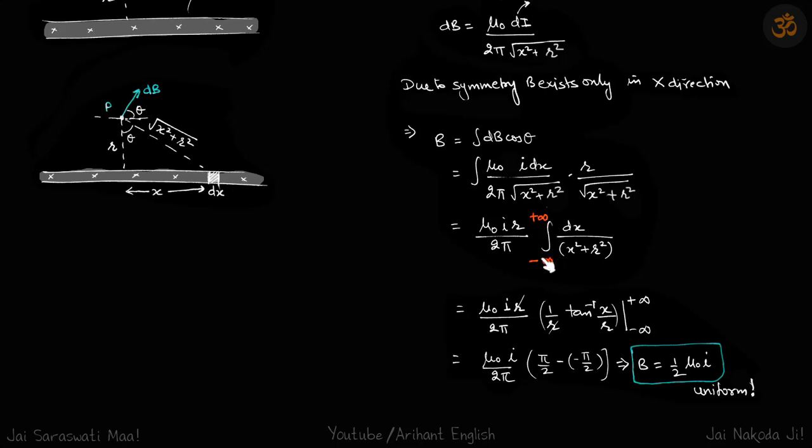Now we need to integrate it. The limits of x vary from minus infinity to plus infinity. This integral is tan inverse x by R; we put the values minus infinity to plus infinity, and it becomes π/2 minus (-π/2). We get our final answer: B equals μ₀i/2, which is uniform.